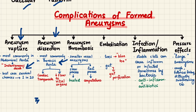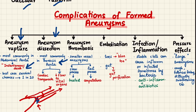In thoracic aortic dissection, if there is an intimal tear at the level of the ascending aorta, blood flowing between the intima and media can go retrograde and enter the pericardial cavity, compressing the heart — a condition called cardiac tamponade. Additionally, since blood is going backwards, there will be decreased flow to vital organs.